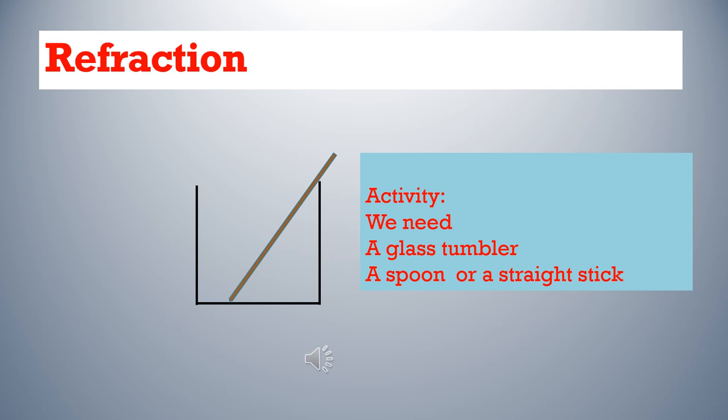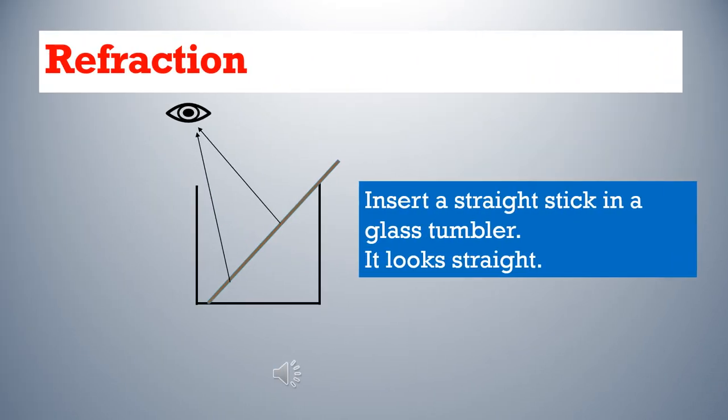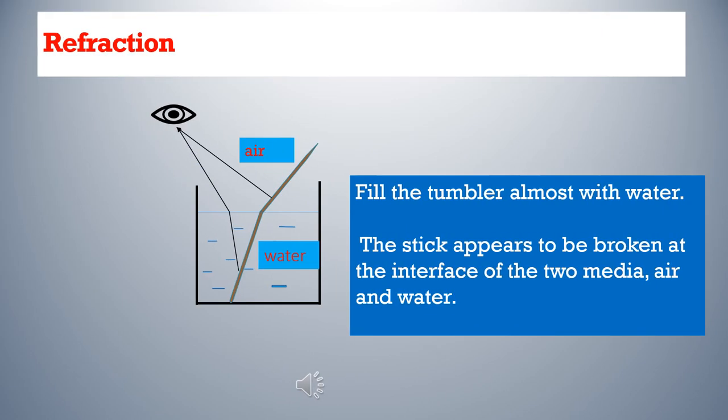Can we start with an activity? For that we need a glass tumbler, a spoon or a straight stick, and some water. Insert the straight stick in the glass tumbler as shown in the diagram. The stick is straight – it looks straight. Now fill the tumbler almost with water. The stick appears to be broken at the interface of the two media, air and water.